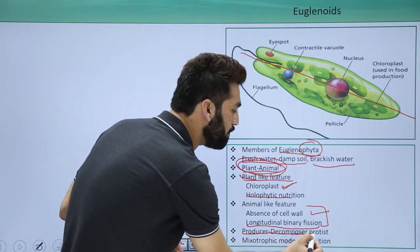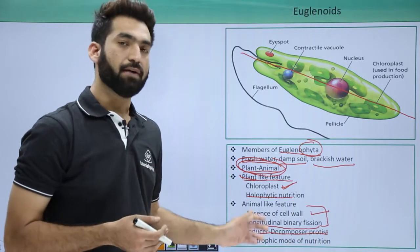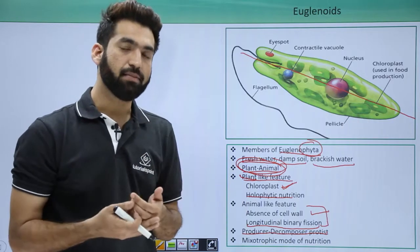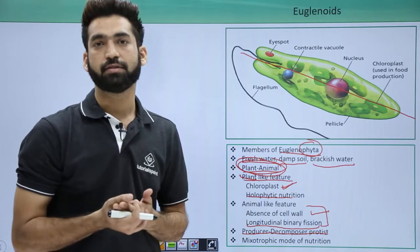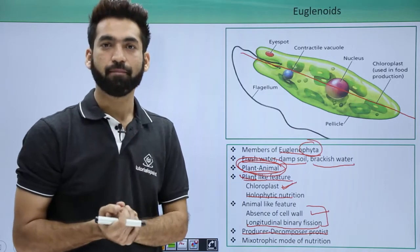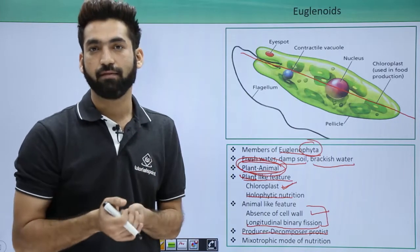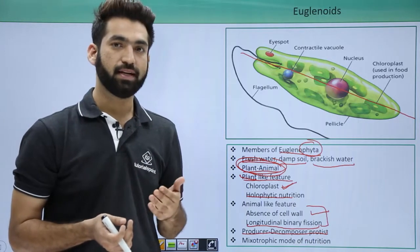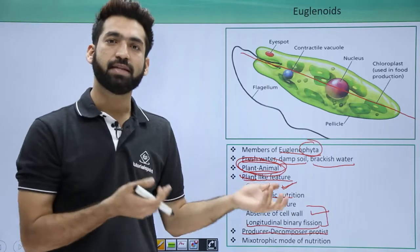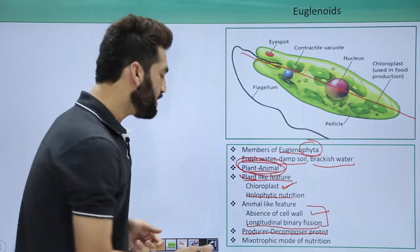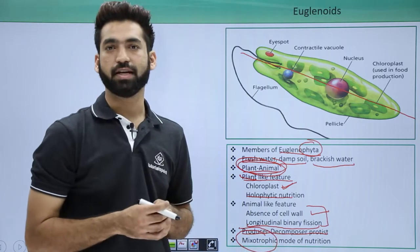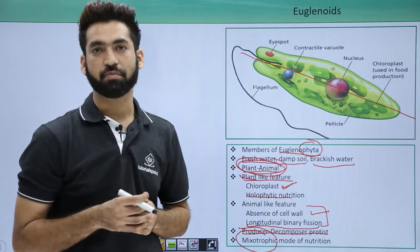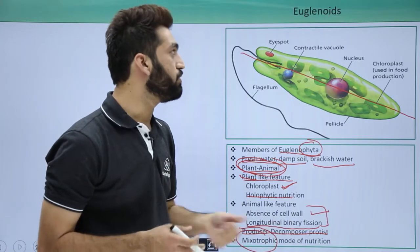They are also called 'producer-decomposer protists'. Because they have holophytic nutrition they can prepare their own food, so they are producers. But when light is not available, euglena behaves like a saprophyte, consuming nutrients from dead and decaying matter. This dual ability — photosynthetic and saprophytic — is called mixotrophic mode of nutrition, which is why they are called producer-decomposer protists.